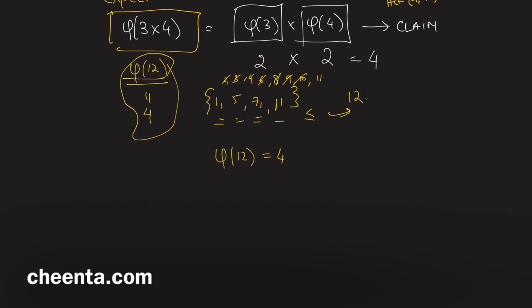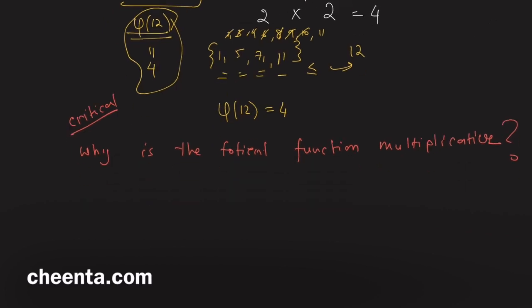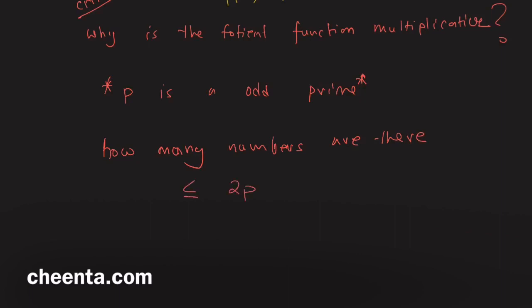Why is the totient function multiplicative? We will discuss this in our internal video and in our class lectures, along with related problems. This is a very critical question — think about it. Now, the ISI entrance problem states: if p is an odd prime, how many numbers are there less than or equal to 2p?